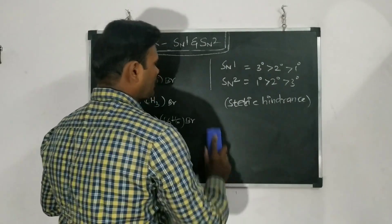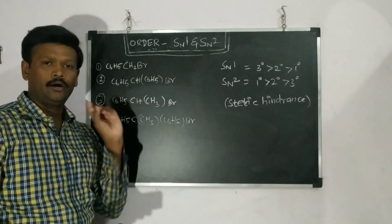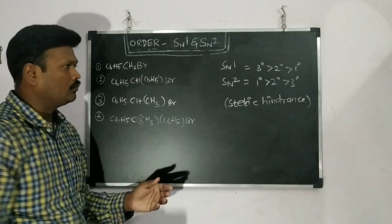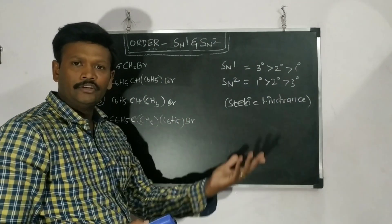Let's see one by one. So here first of all our aim is to find out the degree of the component. Then we have to see the steric hindrance. That's it. So we can find out the SN1 and SN2 order.